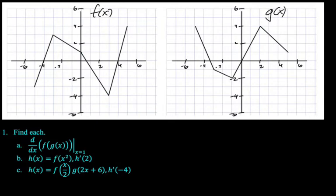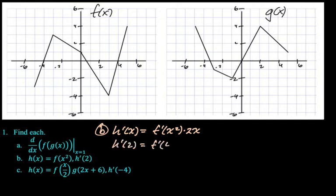Alright, we want to find h prime of 2 for h(x) = f(x²) times h'(2). The derivative of f of something is going to be f prime of that thing, so f prime of x² times the derivative of that thing, times 2x. Now we're going to do the same thing. We're going to take the 2 that we need to plug in and replace every x with that 2. So h prime of 2 is going to be f prime of 4 times 4.